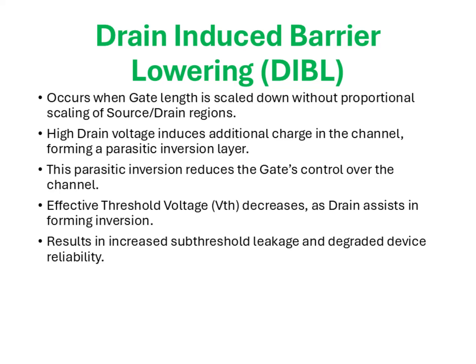Continuing from our discussion on punch-through, another closely related short channel effect that becomes increasingly dominant as devices are aggressively scaled is drain-induced barrier lowering, or DIBL. The essence of this phenomenon lies in the weakening of gate control when the channel length is reduced without proportionally adjusting the source and drain regions. In such a case, a high drain voltage penetrates deeply into the channel, effectively modulating the potential barrier that the gate is supposed to control. The drain electric field induces additional carriers in the channel, creating a parasitic inversion layer that interferes with the desired channel formation controlled by the gate.